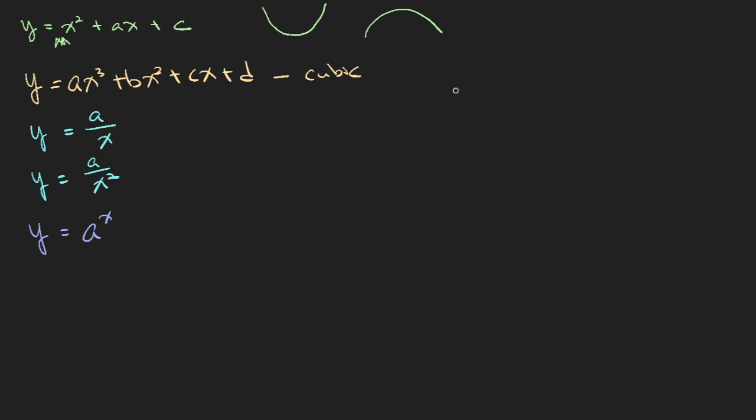For the cubic function, your graph looks like this. Either like that or like this. So to be more precise, this occurs when a is greater than 0. And this when a is less than 0. So d is the y-intercept, where your graph cuts the y-axis.